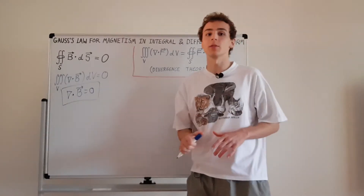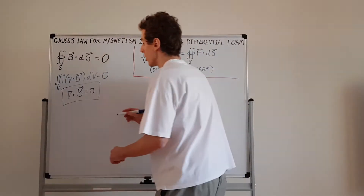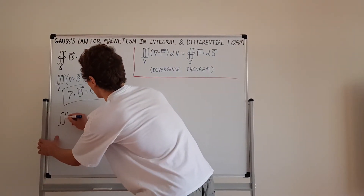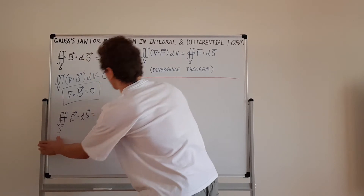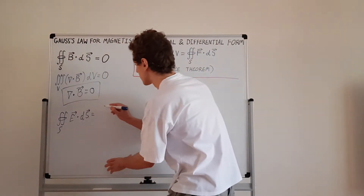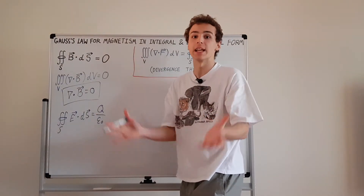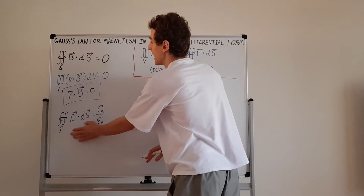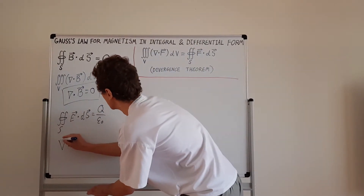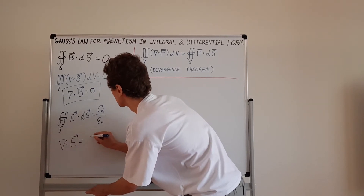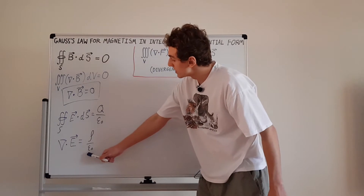This is Maxwell's second equation in differential form — the divergence of the B field is always zero. Comparing with the electric field case: the surface integral of an electric field dot dS is not equal to zero — it equals the charge enclosed divided by epsilon-nought, which can be expressed as a triple integral of the charge density in some volume. In differential form, the divergence of the electric field equals the charge density rho over epsilon-nought, the permittivity of free space.